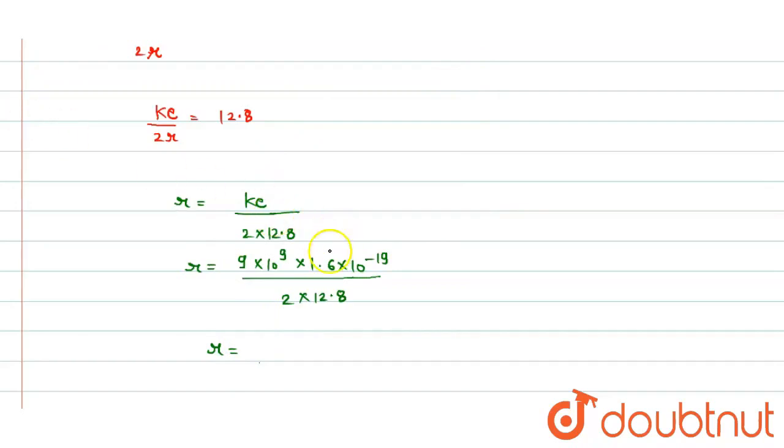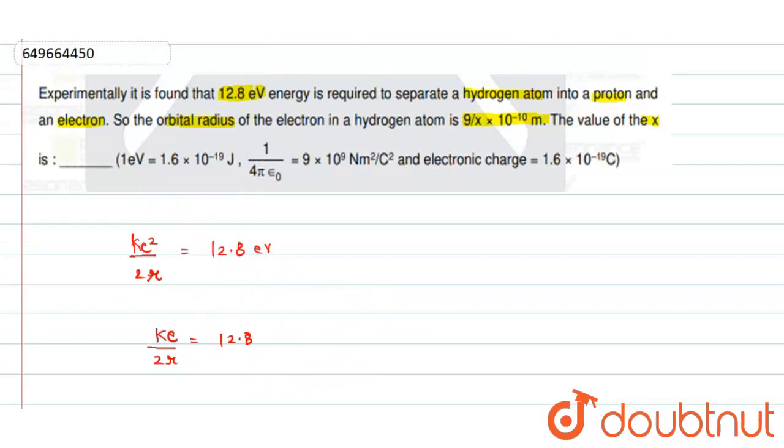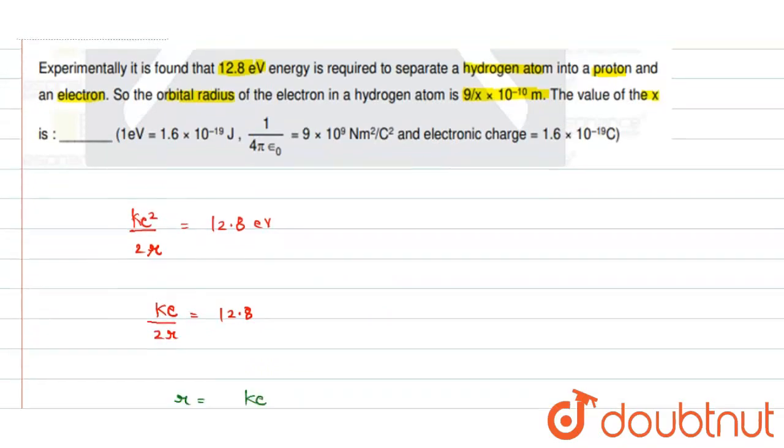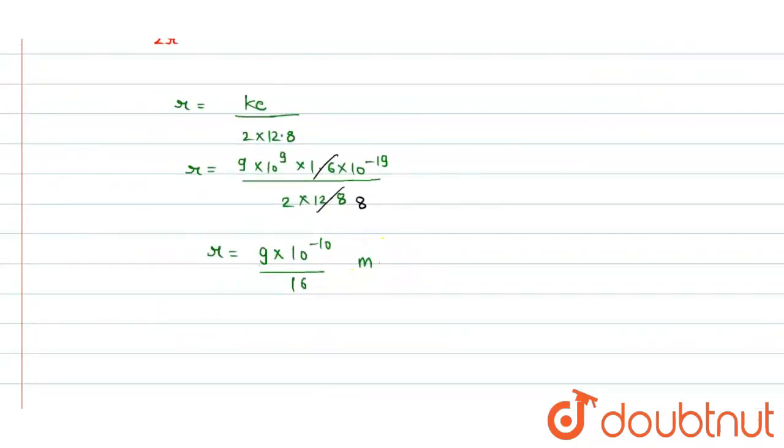This gives us 8 times 9 times 10 to the power minus 10 divided by 16, in meters.